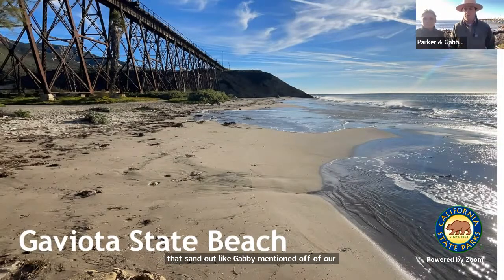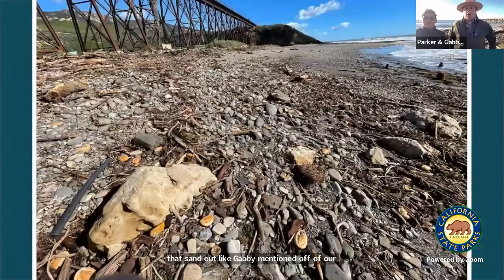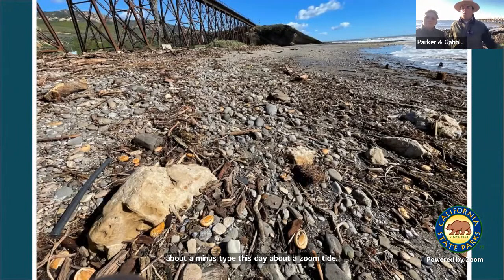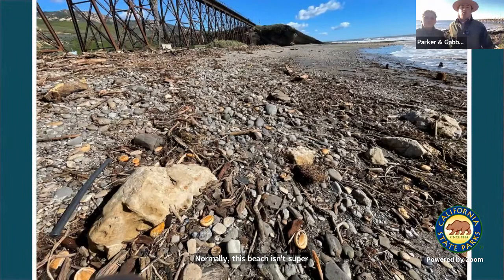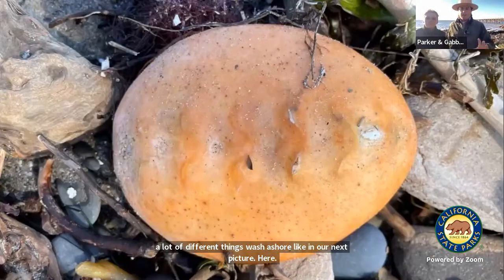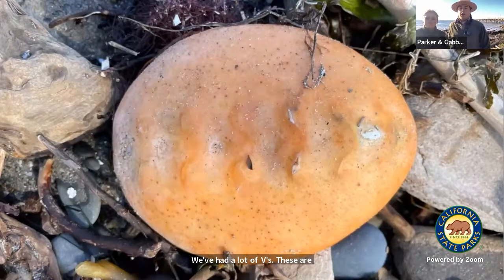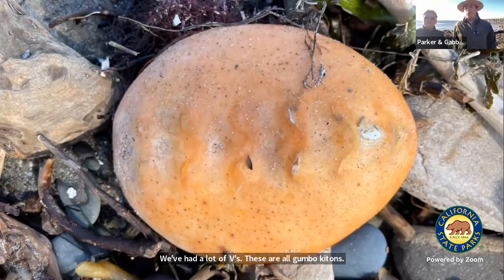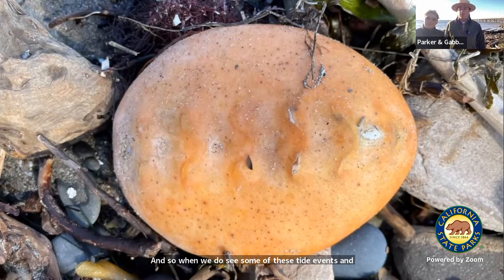This is normally what our beach looks like here — a nice long sandy beach without a lot of rock. But right now we're seeing a lot of rock because those increased king tides are taking a lot of that sand out off our coast. This is what it looked like the other day at low tide — about a zero tide — and you can really just see all of the rock. Normally this beach isn't super rocky. We have seen a lot of different things wash ashore. Here we've had a lot of gumboot chitons. When we do see these tide events and storm events, we see lots of things washing ashore, especially gumboot chitons.